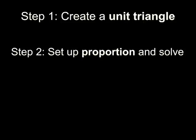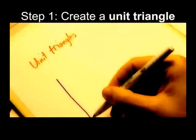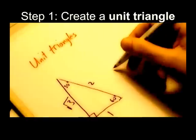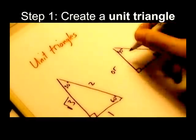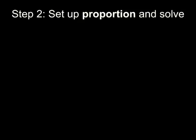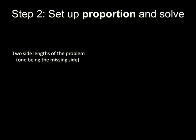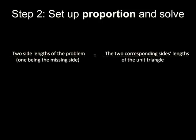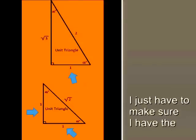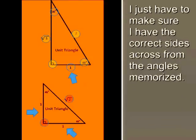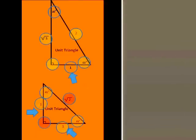And proportions make these a breeze. So I make a unit triangle with the shortest side as one. Proportion, cross multiply, and then I'm done. I just have to make sure I have the correct sides across from the angles memorized.